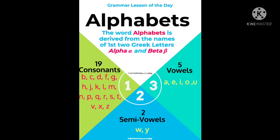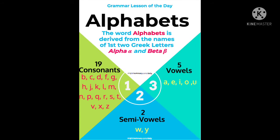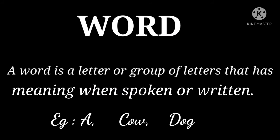Now let's come to words. What is a word? A word is a single letter or a group of letters that has meaning when spoken or written. For example, 'a' is a single letter that makes a word. Two or three letters together can also make a word, for example 'cow' has three letters and 'dog' has three letters.